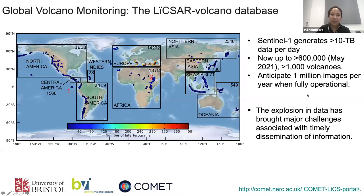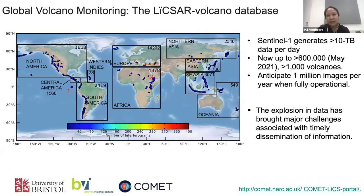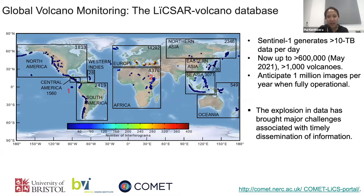We can use InSAR to monitor volcanoes around the world, as you can see in these maps. The benefit is particularly for those in remote areas where ground-based systems are not available. This map shows the location of volcanoes acquired by Sentinel-1 satellites, and they are automatically processed with LICSAR, so interferograms cover 0.5 degrees centered at each volcano, and each of them is stored in Jasmine.